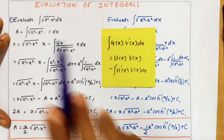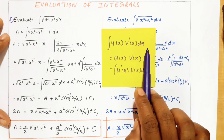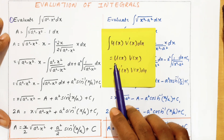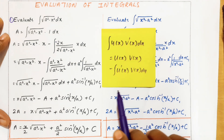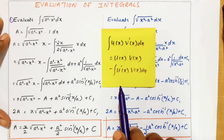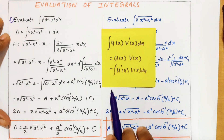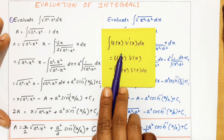This integration is in the form: integral of u(x)·v'(x) dx equals u(x)·v(x) minus integral of u'(x)·v(x) dx. So this is the integration by parts we already discussed in the previous videos. So I am taking this in this form only.